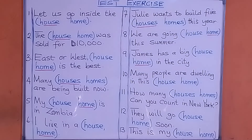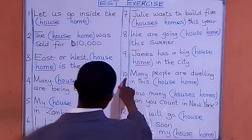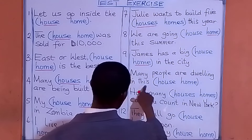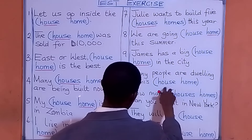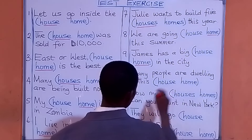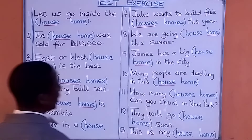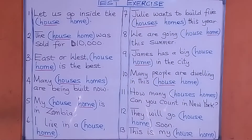Number ten: 'Many people are dwelling in this ___.' What are we going to put there? Many people are dwelling in this house.